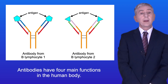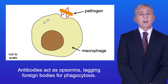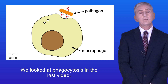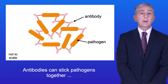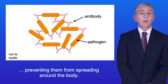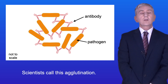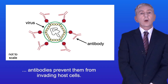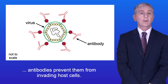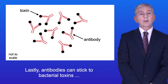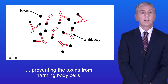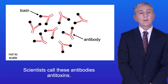Antibodies have four main functions in the human body. First, antibodies act as opsonins, tagging foreign bodies for phagocytosis. Second, antibodies can stick pathogens together, preventing them from spreading around the body — scientists call this agglutination. Third, by sticking to pathogens such as viruses, antibodies prevent them from invading host cells. And lastly, antibodies can stick to bacterial toxins, preventing the toxins from harming body cells — scientists call these antibodies antitoxins.